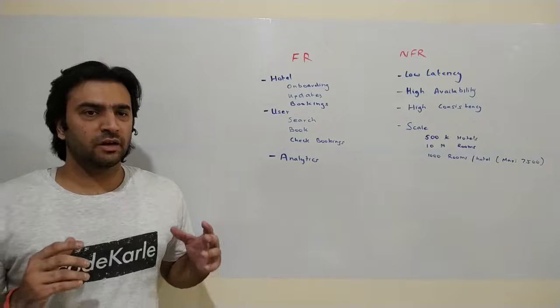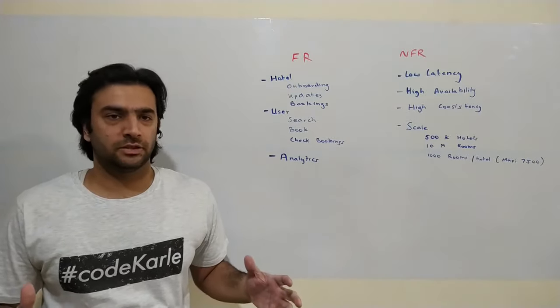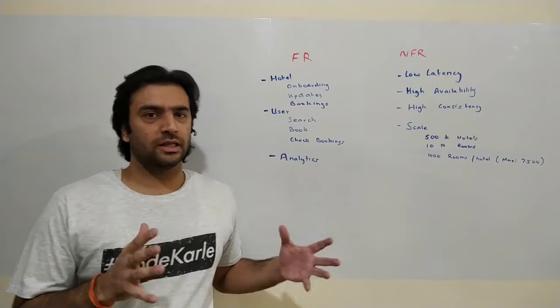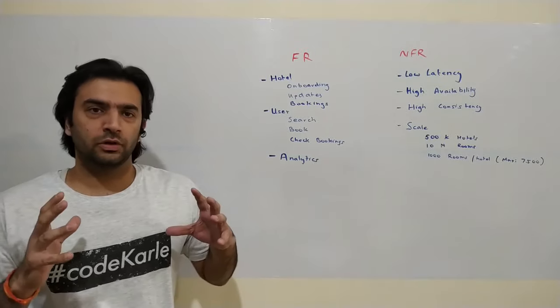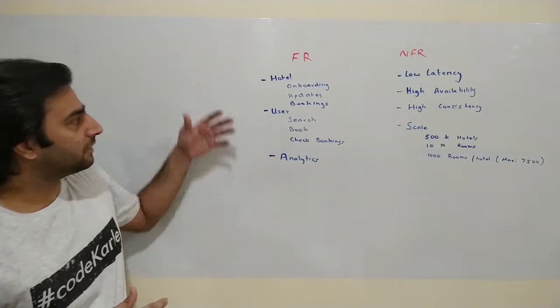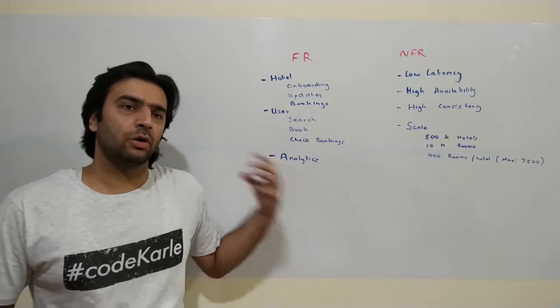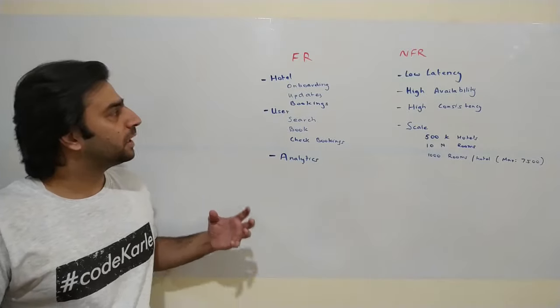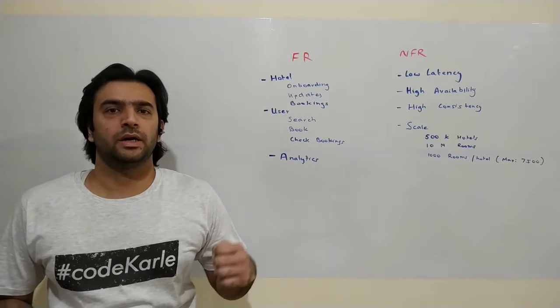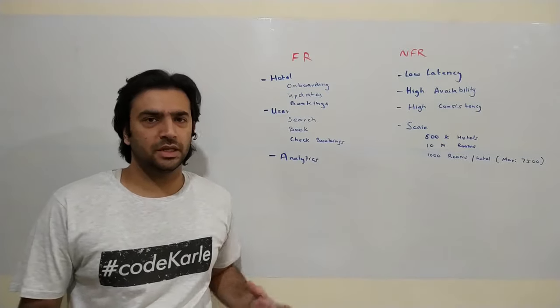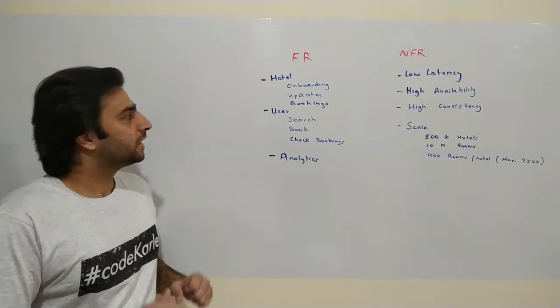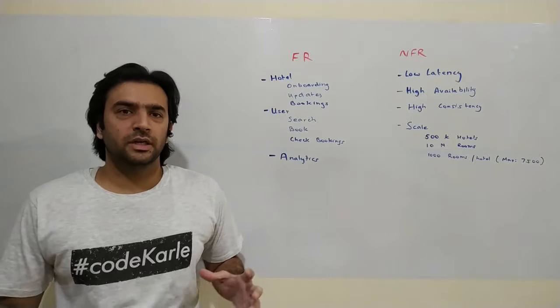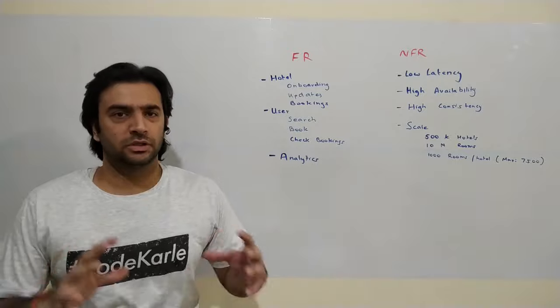Before we jump into the problem, let's first look at the functional requirements, then the non-functional requirements, and then the design. We have two major consumers: the hotel side of users and consumers who want to book hotels. For hotel managers, there are three major functionalities: onboarding onto our platform, updating their property — adding a new room, changing pricing, adding images — and viewing their bookings along with revenue insights.